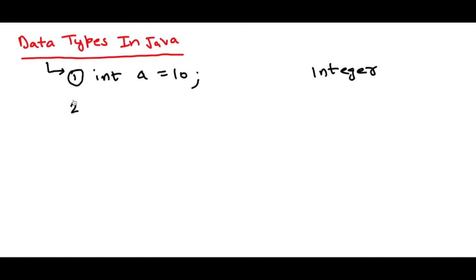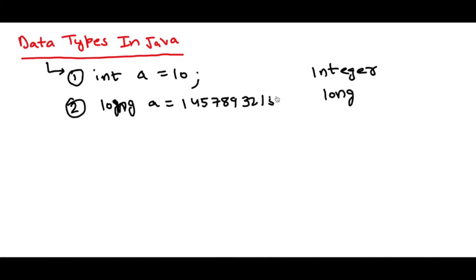The second data type is long. If you want to store very big numbers, you'll have to use the keyword long. For example, long A equal to a very large number like 14578932156. And one important thing: in a long variable, you will have to use the character L after your number. You can use either small L or capital L. This is how you store and use the long data type.